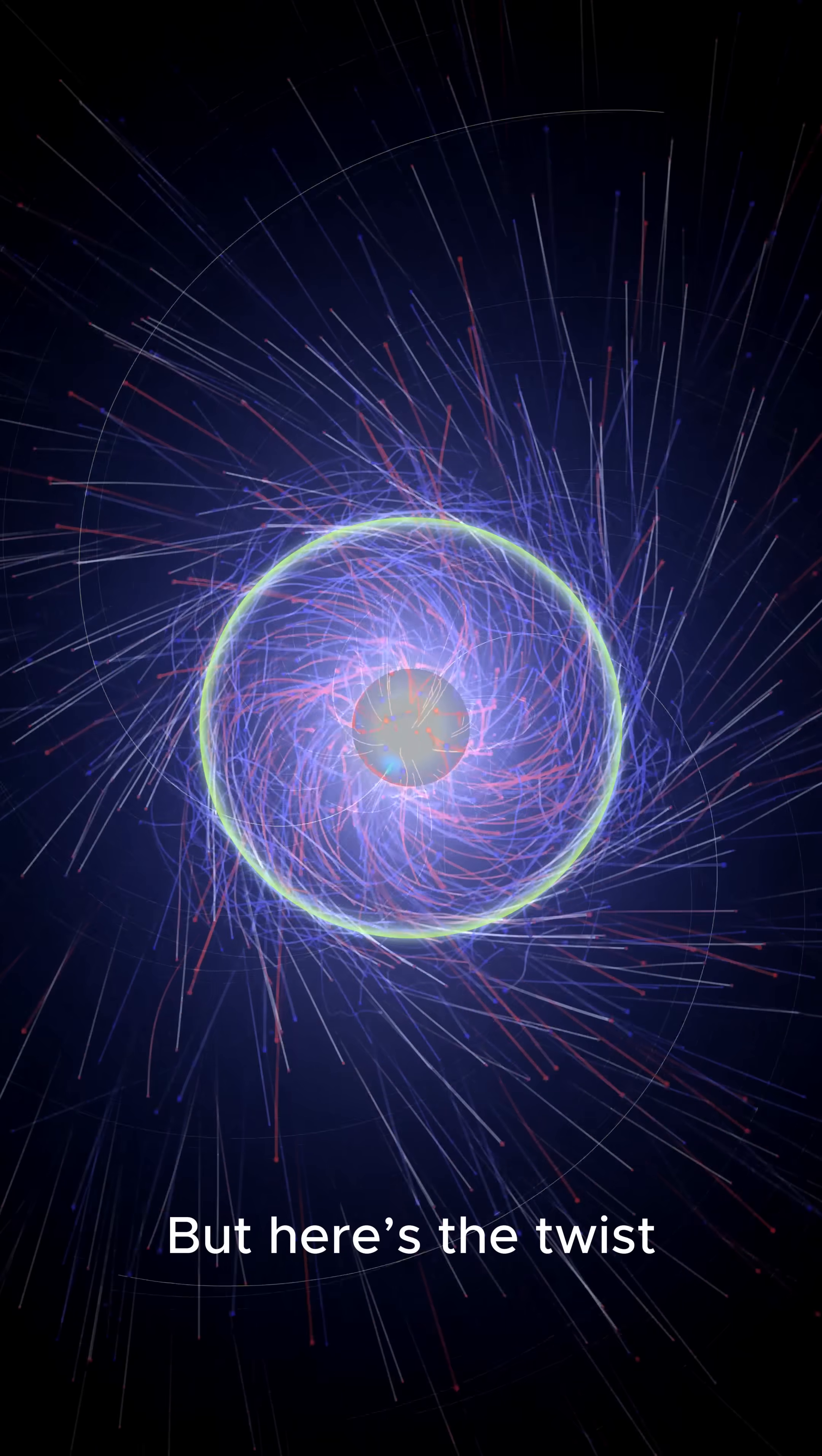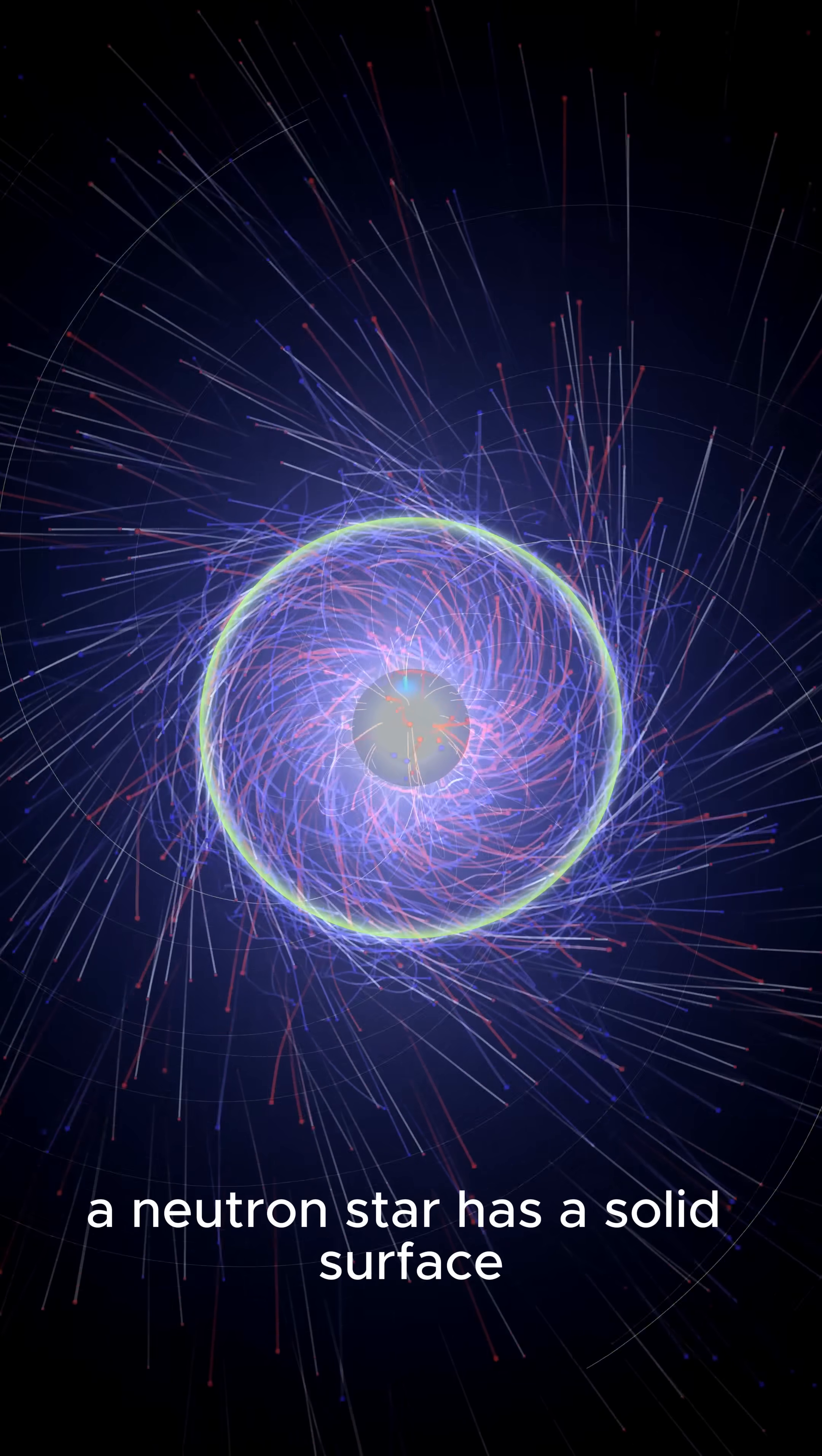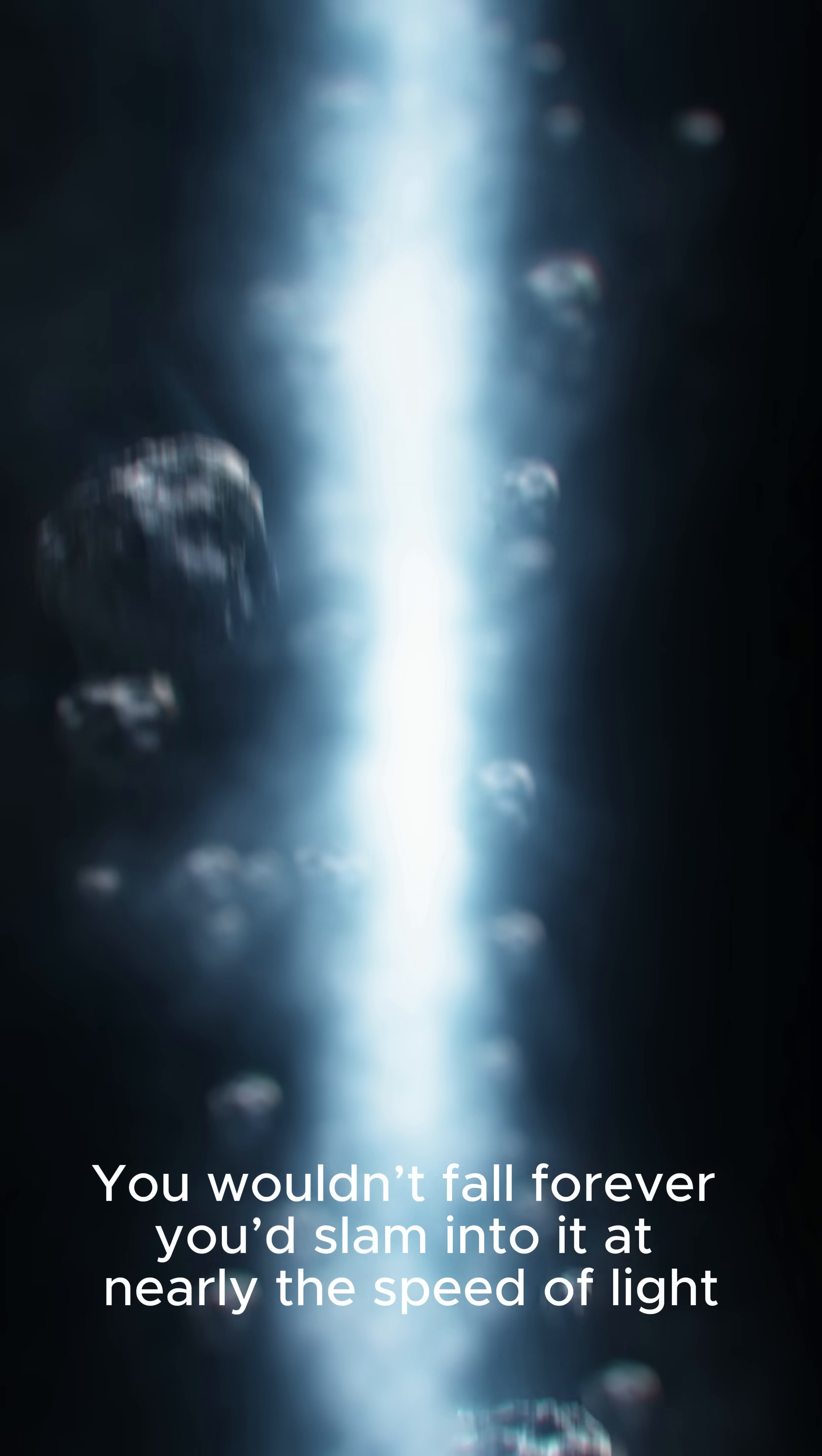But here's the twist. Unlike a black hole, a neutron star has a solid surface. You wouldn't fall forever.